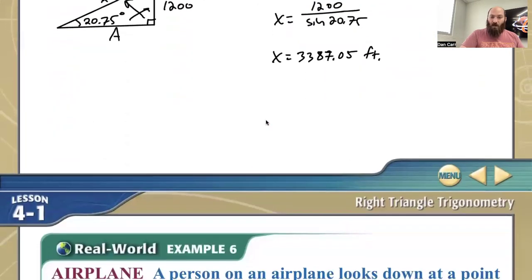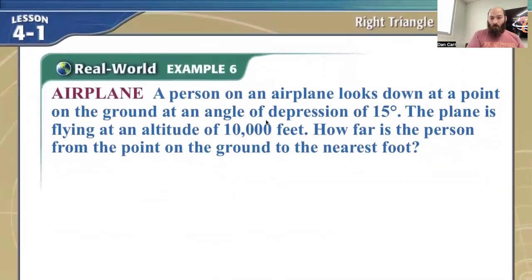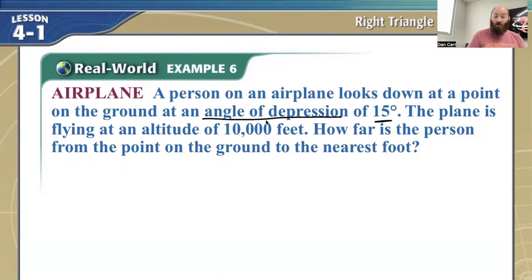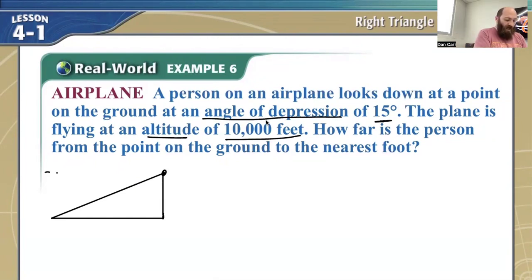So angle of elevation. This is another one related to what's called the angle of depression. The key here is how we model this. A person on an airplane looks down at a point on the ground at an angle of depression of 15 degrees. The plane is flying at an altitude of 10,000 feet. How far is the person from the point on the ground to the nearest foot? When we look at this, my person is at the top of the airplane. They look down at an angle of depression. An angle of depression is the angle it makes for this person to look down — so this is 15 degrees — and they look down and they notice this point way out here.